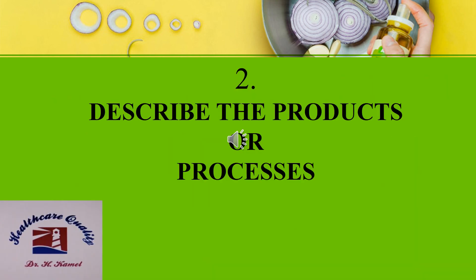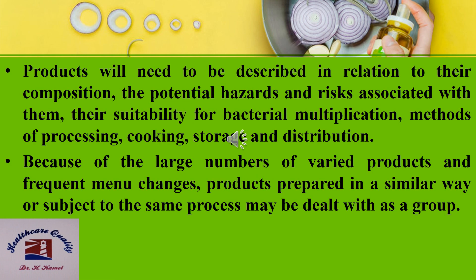The third step is to describe the products or processes. Products will need to be described in relation to their composition, the potential hazards and risks associated with them, their suitability for bacterial multiplication, methods of processing, cooking, storage, and distribution. Because of the large numbers of varied products and frequent menu changes, products prepared in a similar way or subject to the same process may be dealt with as a group.